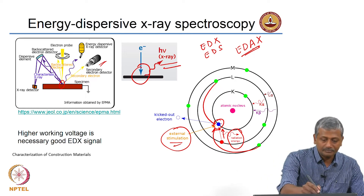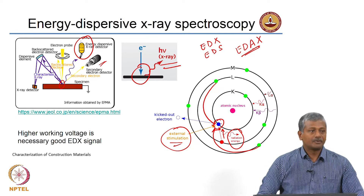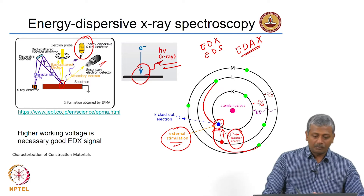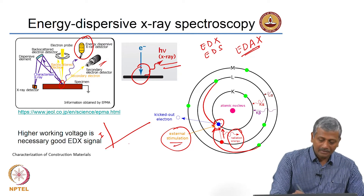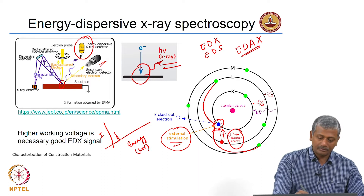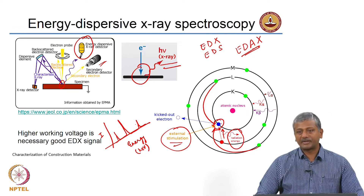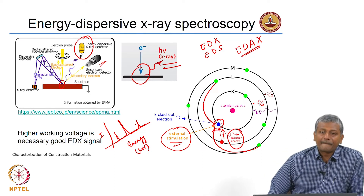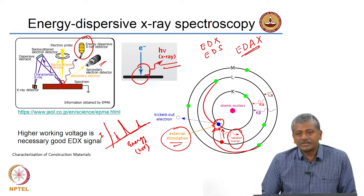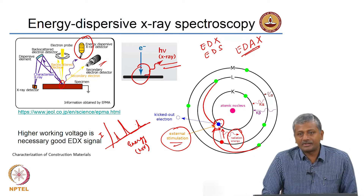If you have an energy dispersive X-ray detector, it collects all X-rays coming from different elements in the sample. For cement, you will get signals from calcium, silicon, iron, magnesium, sodium, potassium — everything — displayed as a plot of intensity versus energy in kiloelectron volts. Each peak in the plot corresponds to a specific element. For very dense materials, you may need sufficient accelerating voltage to generate the inner-shell transitions, but with the right high-energy electron beam you will always generate X-rays from the sample.